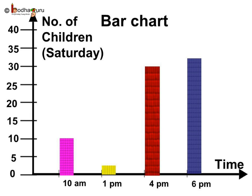Again, we use a bar chart to represent this data. The length of the bar indicates the number of children in the park at different times: 10 children at 10 am, 2 children at 1 pm, 30 at 4 pm, and 32 at 6 pm.